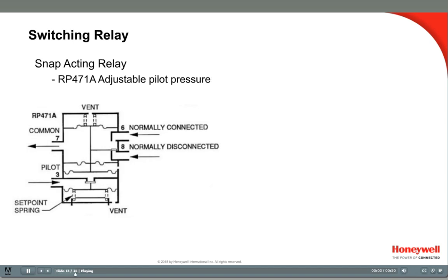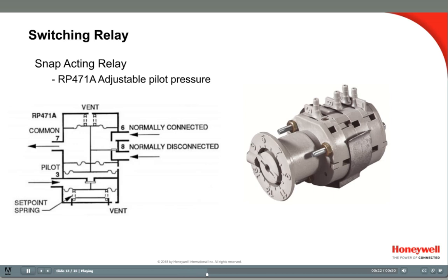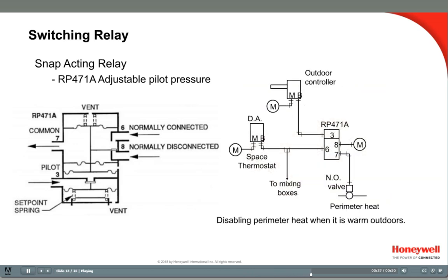The RP-471 is a switching relay similar to the RP-670A. It has one single-pole double-throw relay, but the difference is that it has an adjustable setpoint. It will switch ports at a specific pressure, providing an additional level of control switching logic. The switching setpoint is adjustable between 3 and 15 psi, with about a half psi differential. Just like the RP-670, port 3 is the pilot port and 7 is the common port, with 6 and 8 being the switched ports. In this example, the switch is interrupting the thermostat branch line going to a heating valve, disabling the valve when the outdoor temperature is warm, and additionally applying full main air to hold the valve closed.